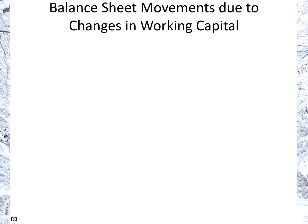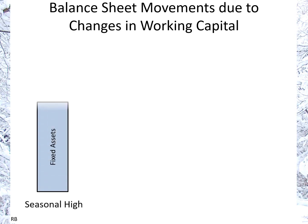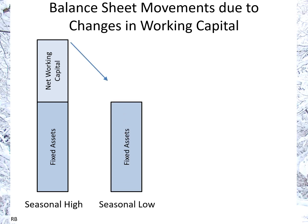Looking at this from a balance sheet point of view, the asset side during the seasonal high will have fixed assets plus net working capital at the seasonal high point. At a seasonal low point, the net working capital falls while fixed assets remain the same, as net working capital varies with the seasonality of the business.